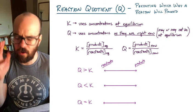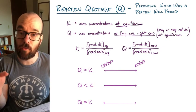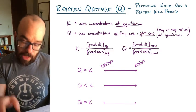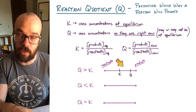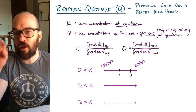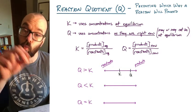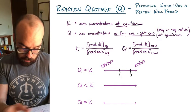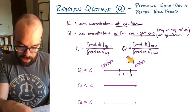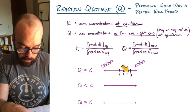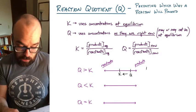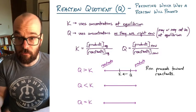An easier way to remember which way the reaction will shift is to use a number line. Plot K on the number line and plot Q on the number line. Since Q is greater than K here, Q is to the right. Q always moves toward equilibrium, so it moves to the left — toward the reactants. The right side represents products, the left represents reactants. So if Q is greater than K, the reaction proceeds toward the reactants.